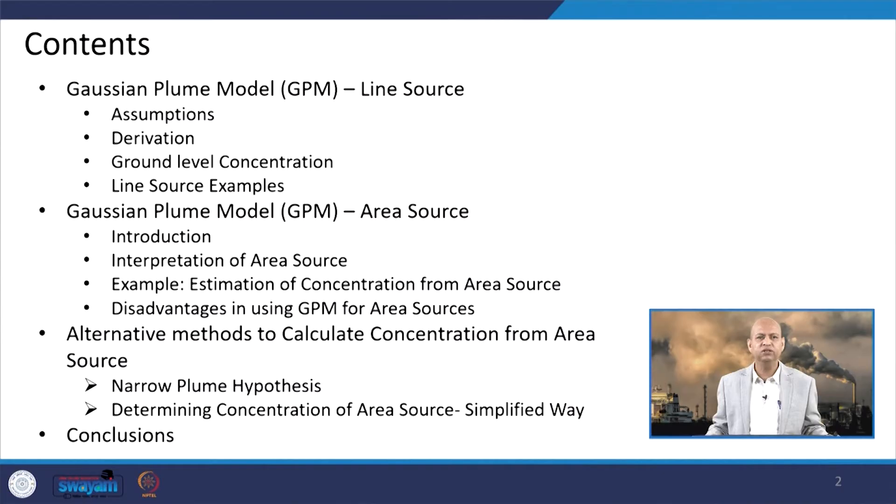Hello friends. You may recall last time we discussed the Gaussian dispersion model for point source. Today we will extend that concept to model air pollution dispersion from the line source and from the area source. First we will see the line source Gaussian dispersion model, the basic assumptions used for its derivation, and some examples for clarity.